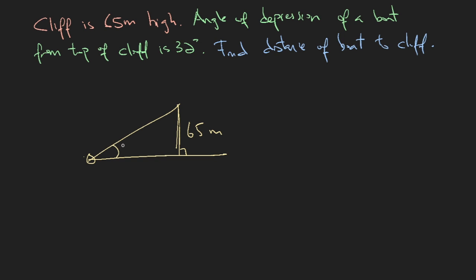So the angle of depression is really this angle, 32 degrees. But this is an alternate angle, so in your triangle, the angle here is also 32 degrees. So if you know the height of the cliff, which is 65, it is a simple matter to find out this, which is the distance. So tangent 32 degrees...